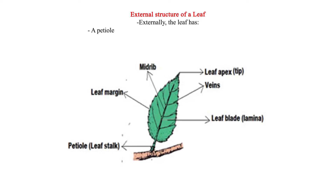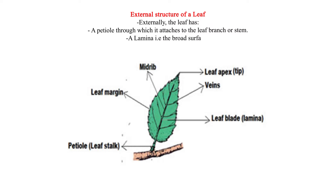External structure of a leaf. Externally, the leaf has a petiole through which it attaches to the branch or stem, a lamina that is the broad surface, a margin which is the outline, and the leaf apex.